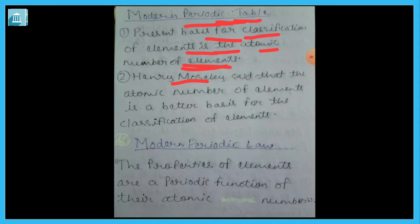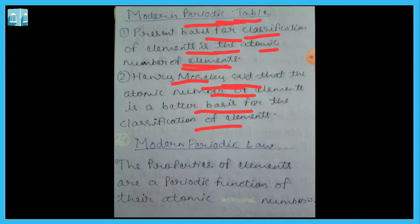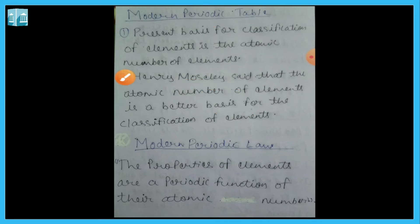Henry Moseley said that the atomic number of elements is a better basis for classification. In the 18th century, there was no such discovery — elements were classified on the basis of atomic masses. But later it was said that atomic number is more suitable. So the Modern Periodic Law states: the properties of elements are a periodic function of their atomic number.